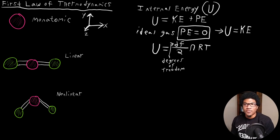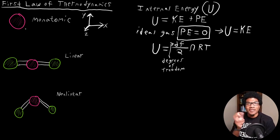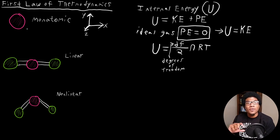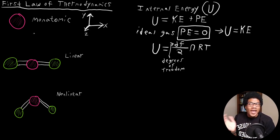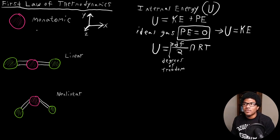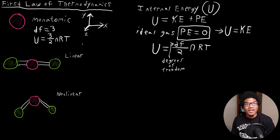The internal energy is U = (DF/2) NRT. For a monatomic gas, if you rotate a single atom approximated as a sphere, it's spherically symmetric all the way around — no matter which axis you rotate it around, it gives the same representation. So a monatomic gas will only have three degrees of freedom, meaning DF equals three. That gives an internal energy of (3/2)NRT — the three degrees associated with its translational motion.